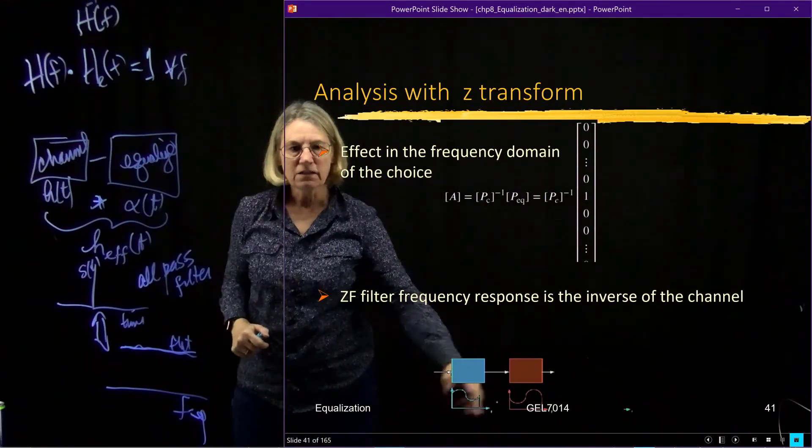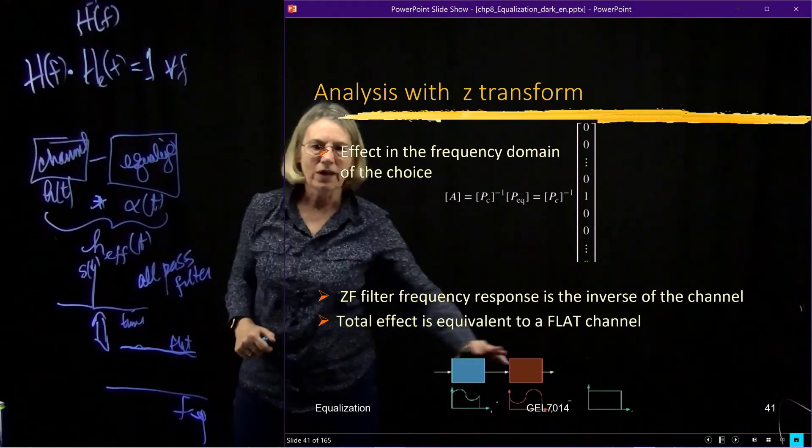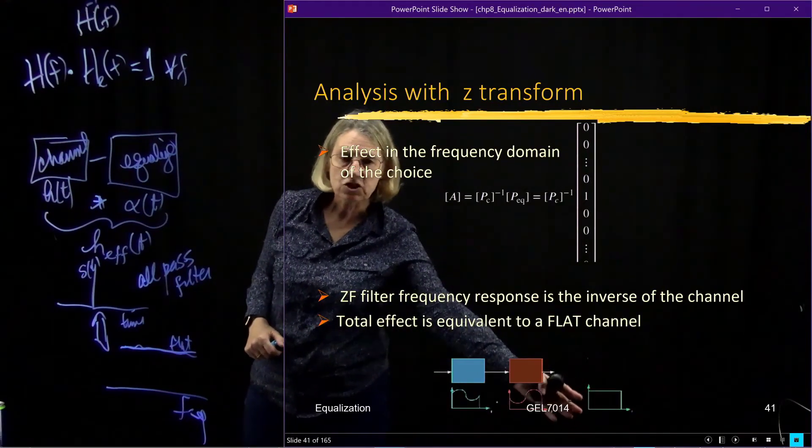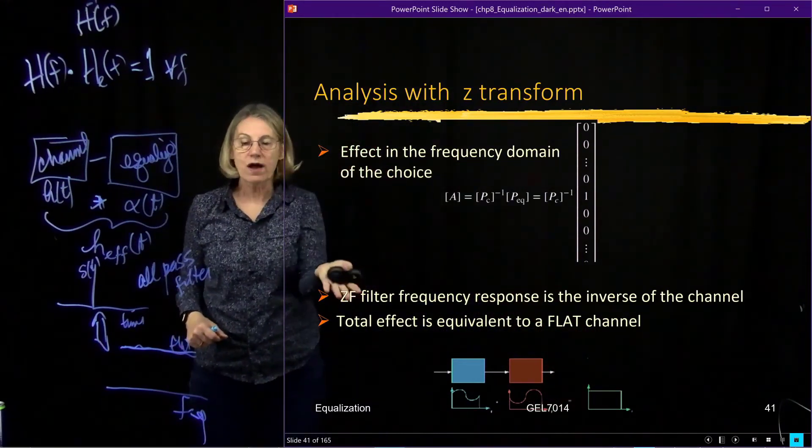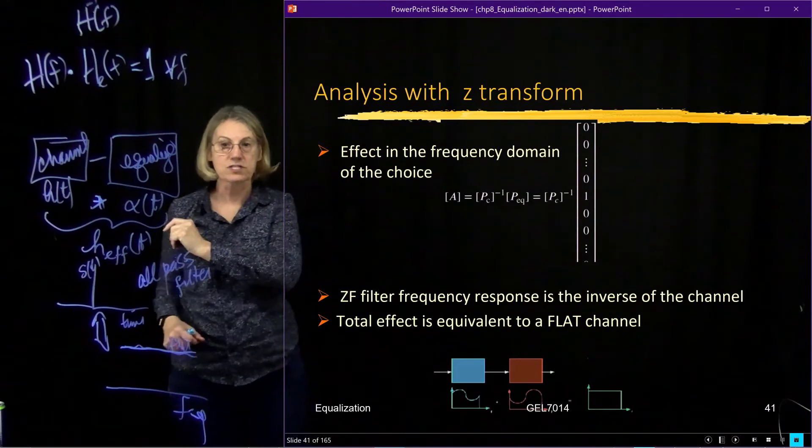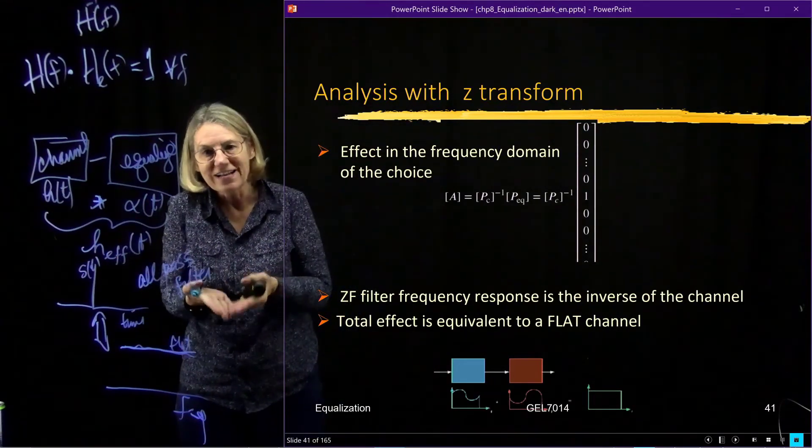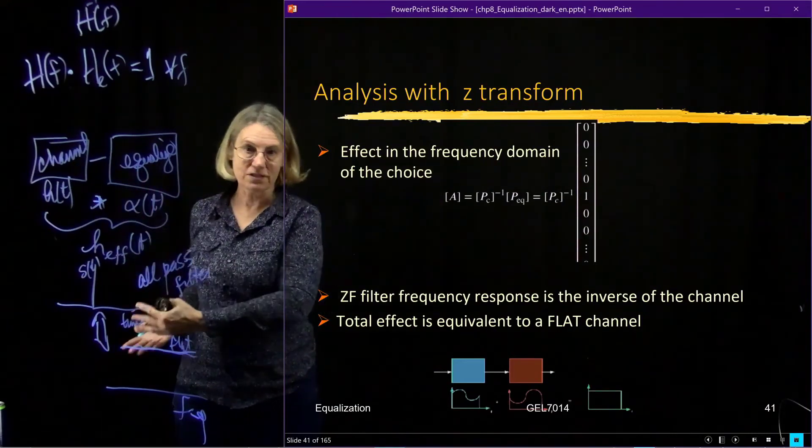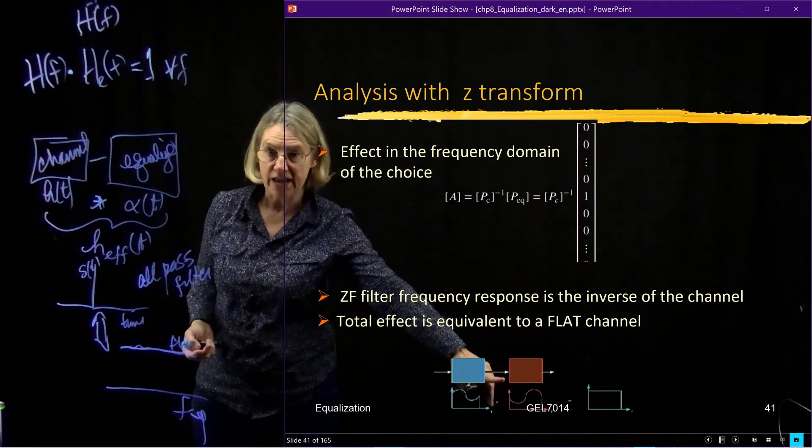So, this is my channel. This is my equalizer frequency response. And when I have the total effect of the two of them, I get something that's flat. That's why when I first described the zero-forcing equalizer, I didn't say, well, I said the name, it forces the ISI component to be zero. But often we hear the description of the zero-forcing equalizer as being the one that inverts the channel.